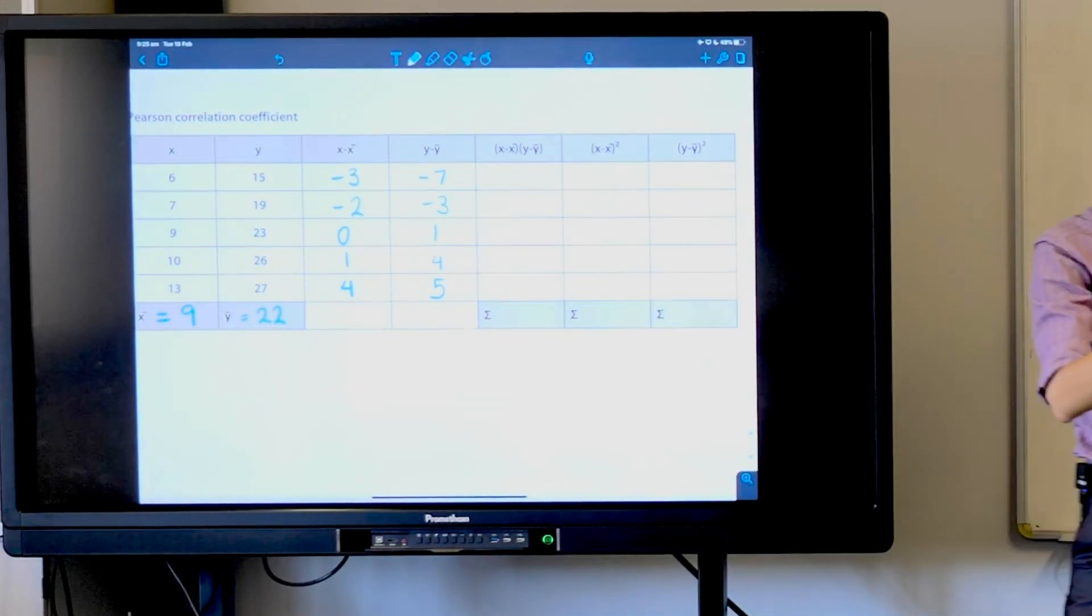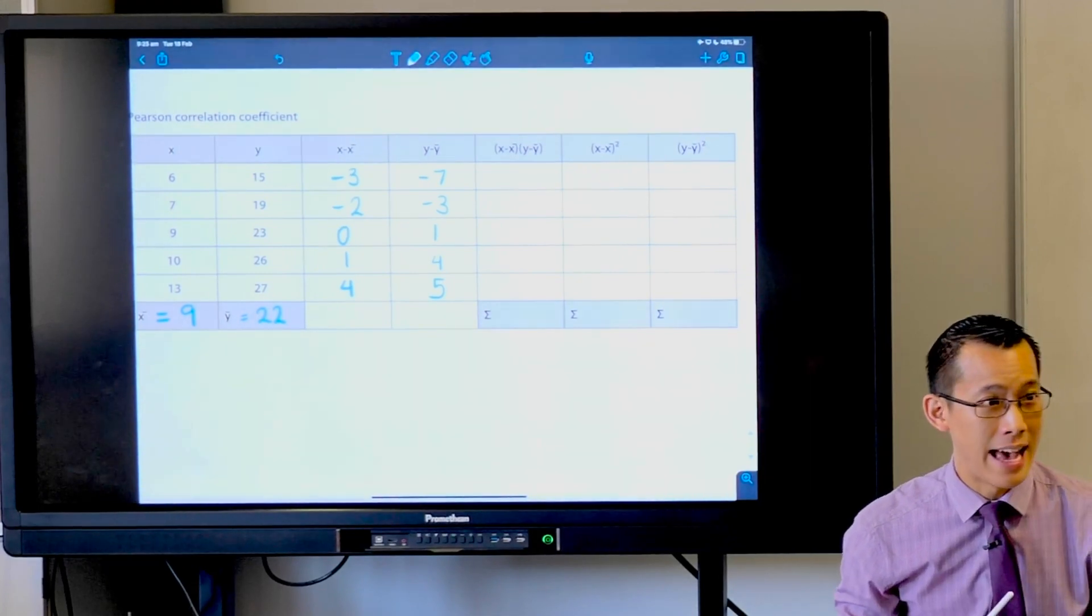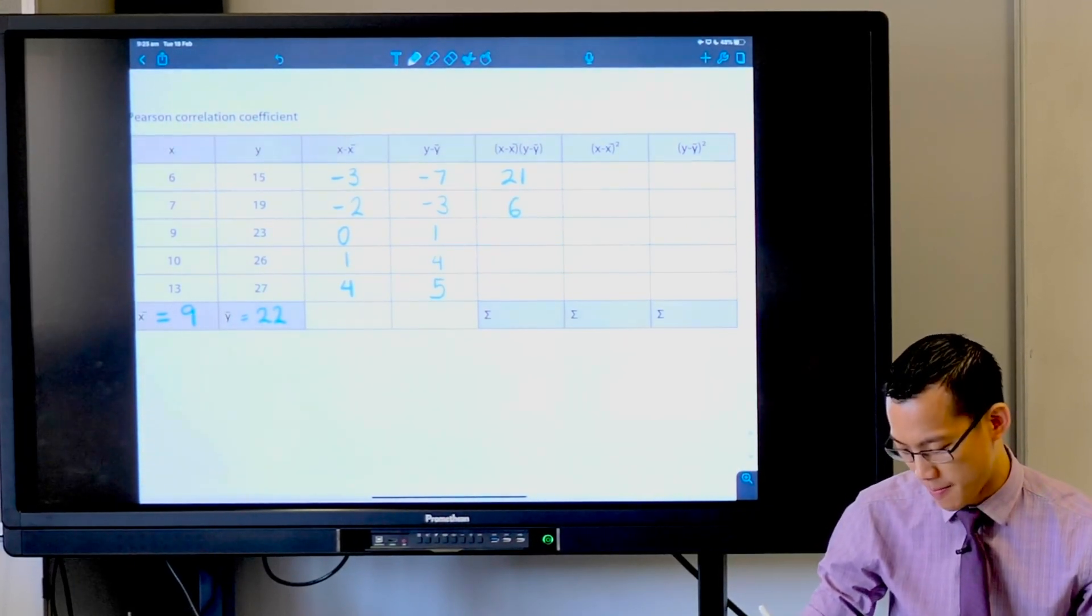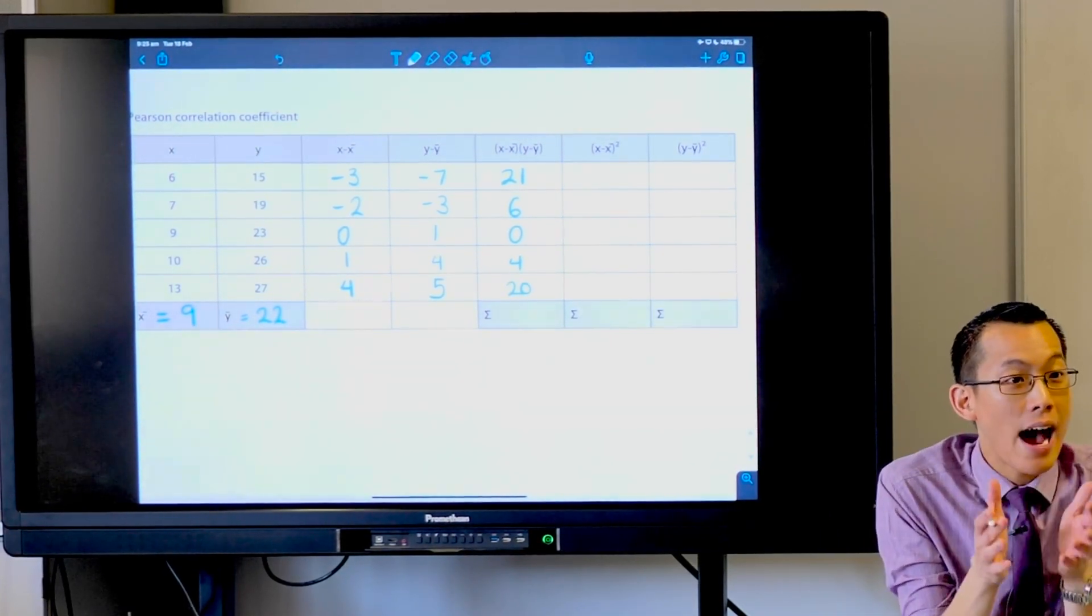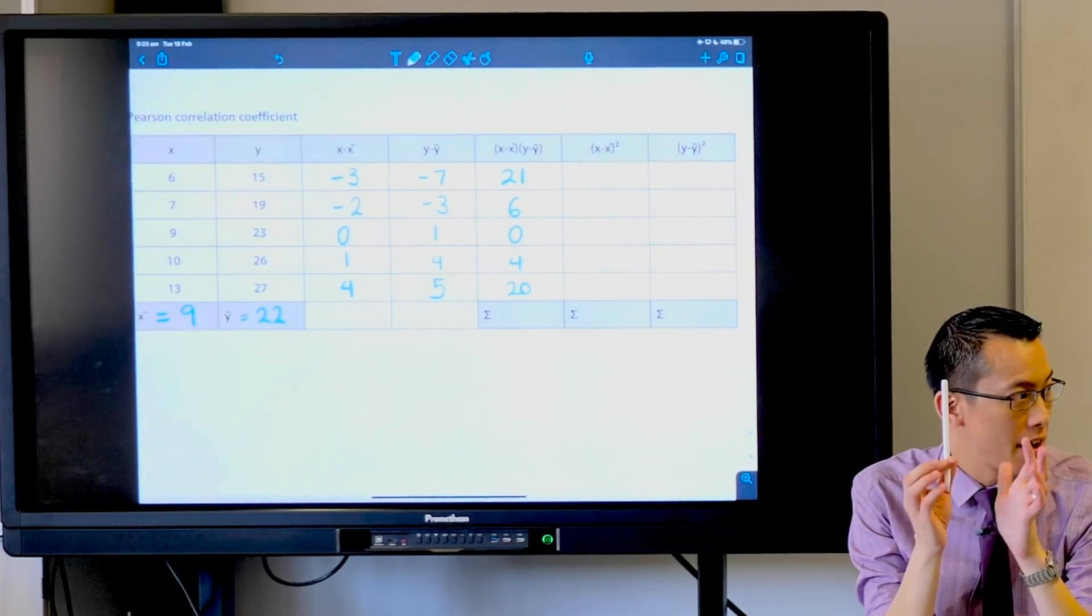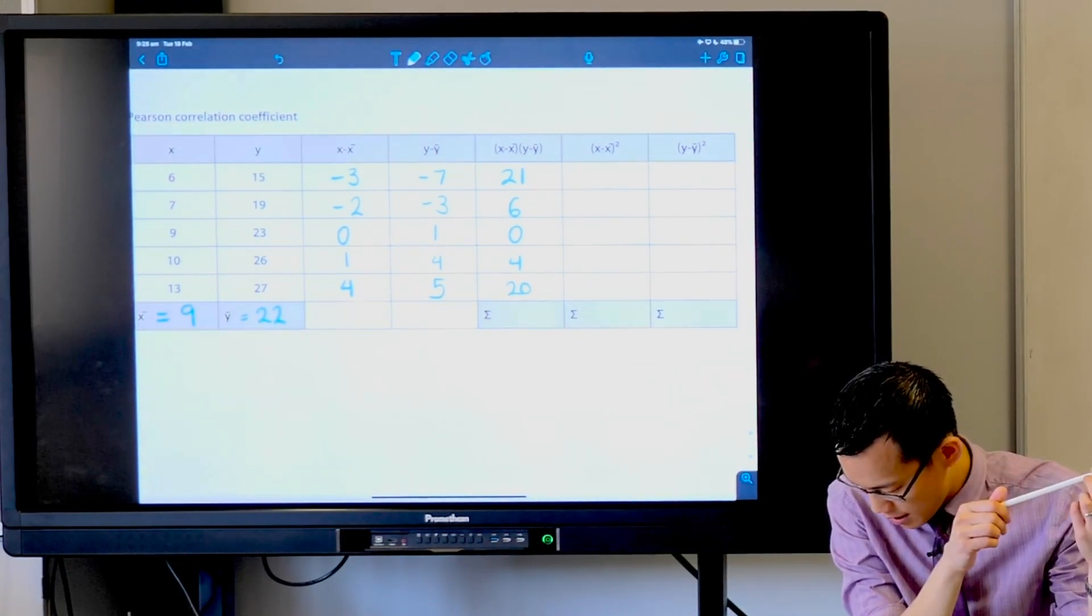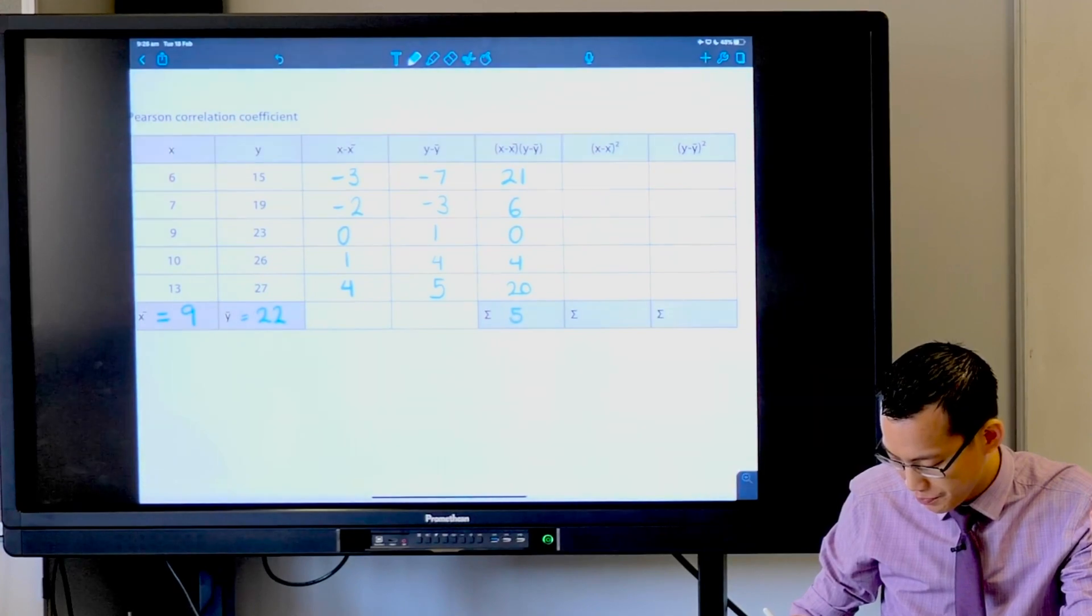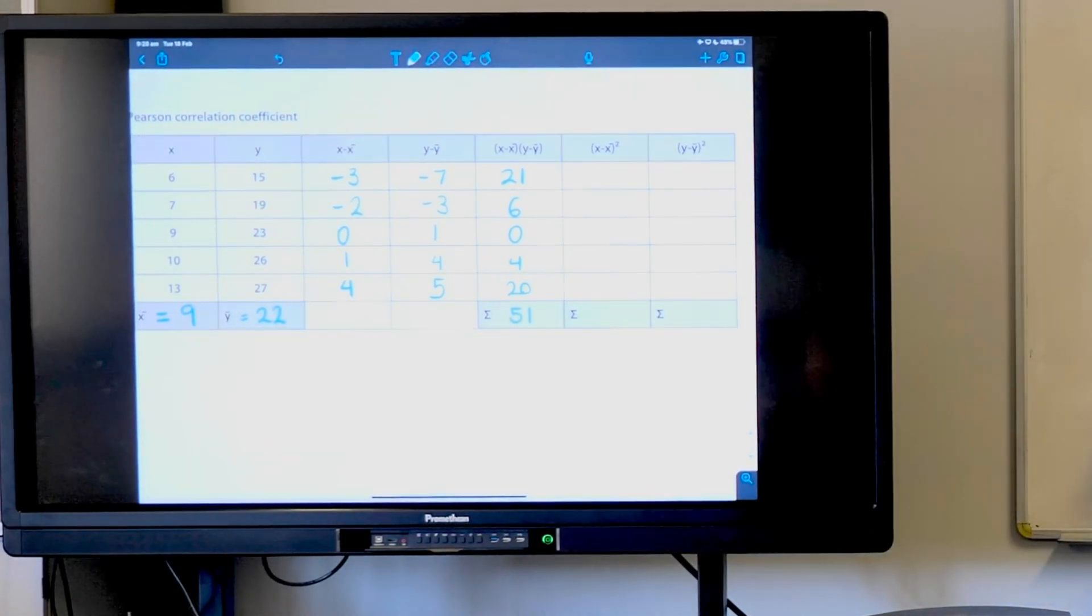Negative three times negative seven—twenty-one. Negative two times negative three—six. Zero times one—zero. One times four—four. And the last one is twenty. Now I've got these five values that I'm adding up: 21, 6, 0, 4, and 20. That's 51. What have we just worked out? We just worked out this whole numerator. In our example, it's 51.